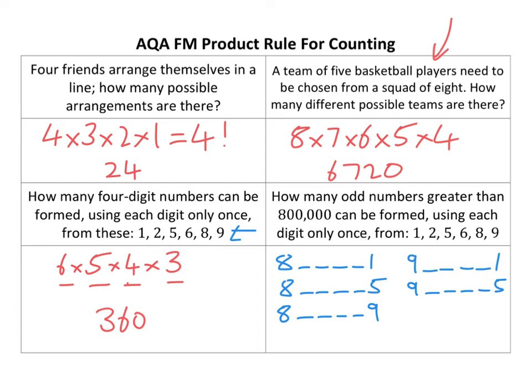The four numbers in the middle — there are four factorial arrangements, and we know that's 24 already. So there are five lots of 24, which is 120. It's using factorials and thinking about how many different options you have to pick the first person or the first number. If you think about it logically like that, it's not too bad.